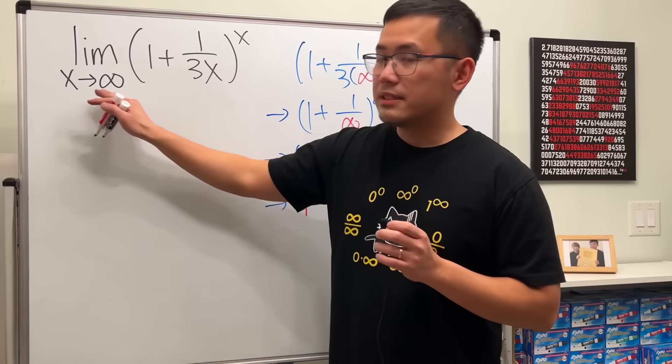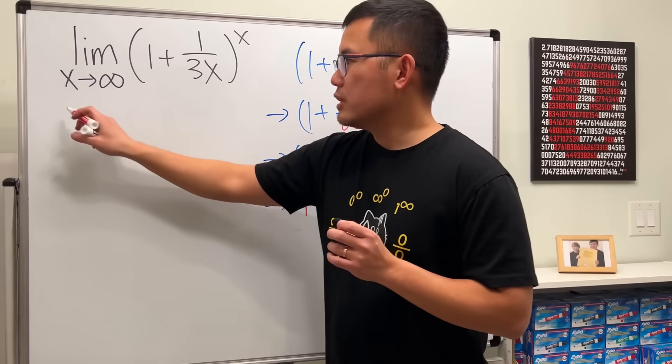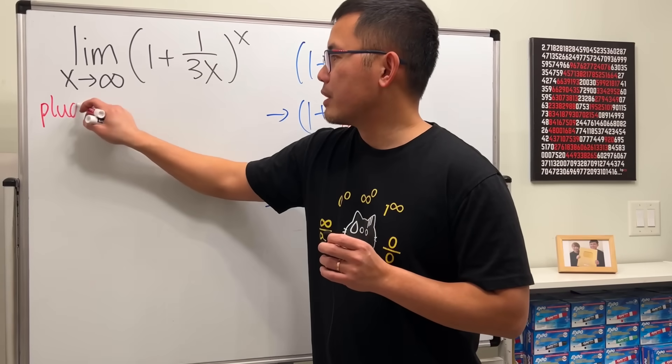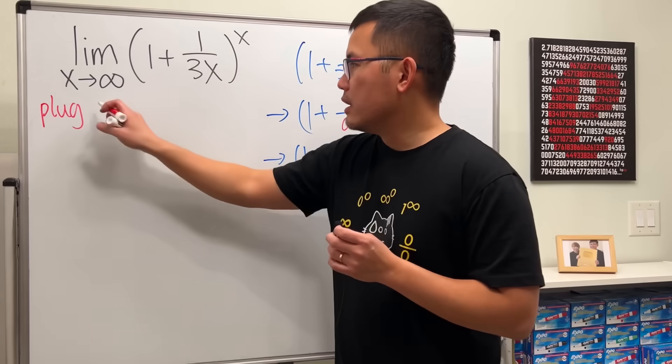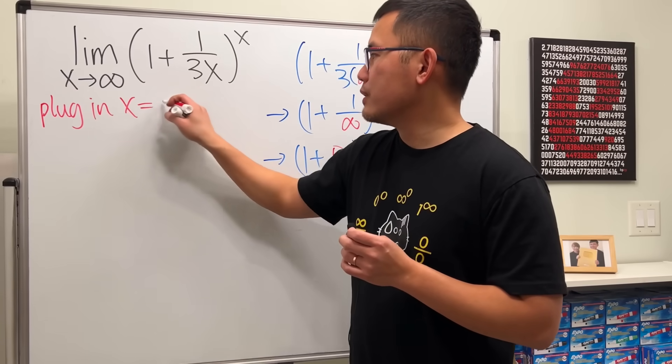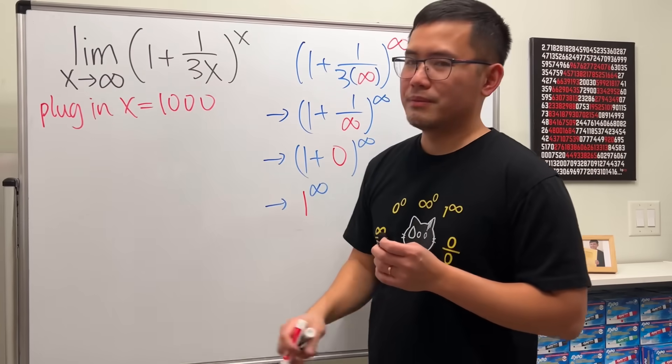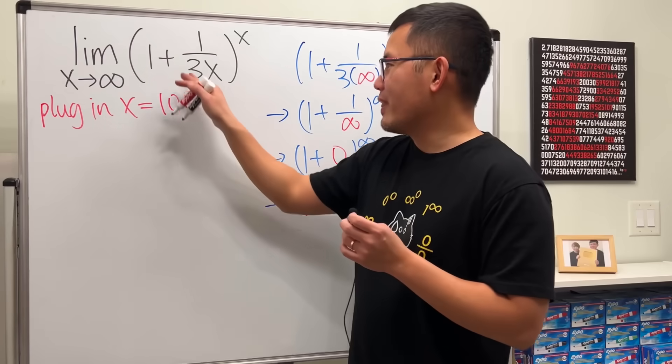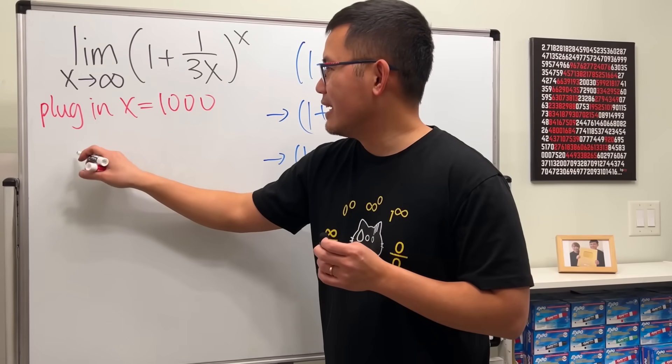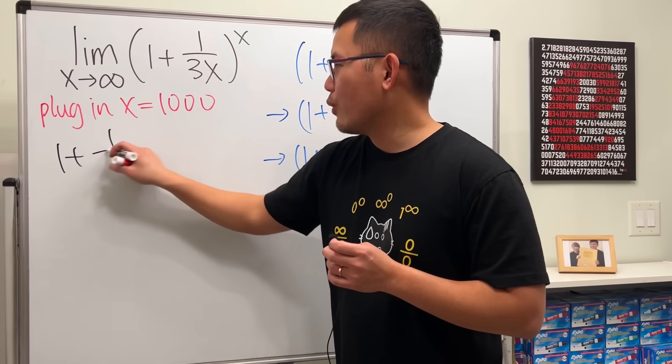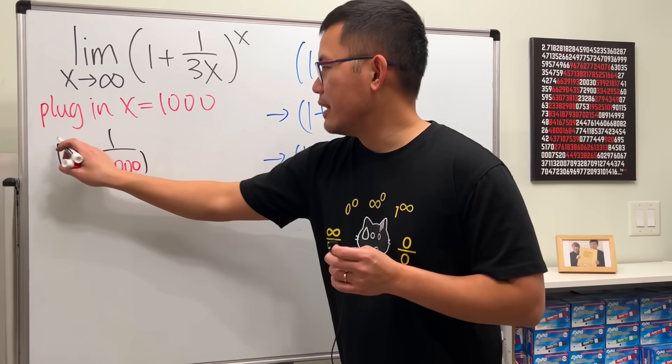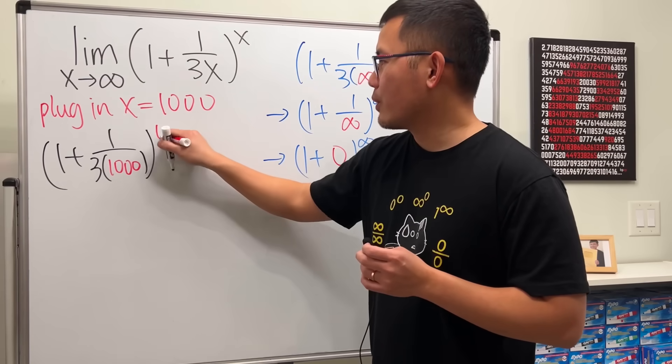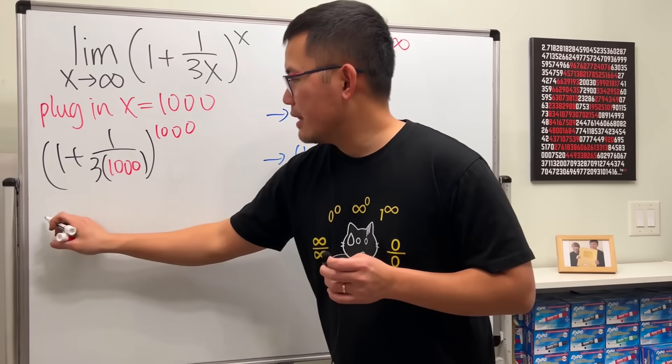So here we have x is approaching infinity. Let me just plug in a big number for x and then observe it along the way for you. Let's say plug in x equals 1,000. Not too big, I know. But anyway, plug in 1,000 into this. We are looking at 1 plus 1 over 3 times 1,000 raised to the 1,000th power.